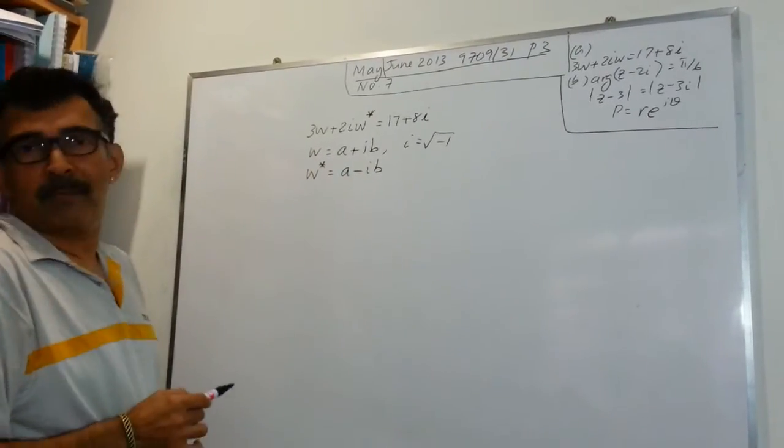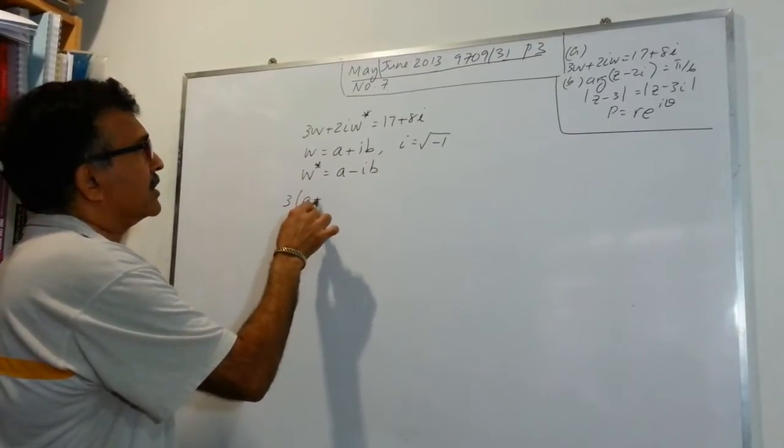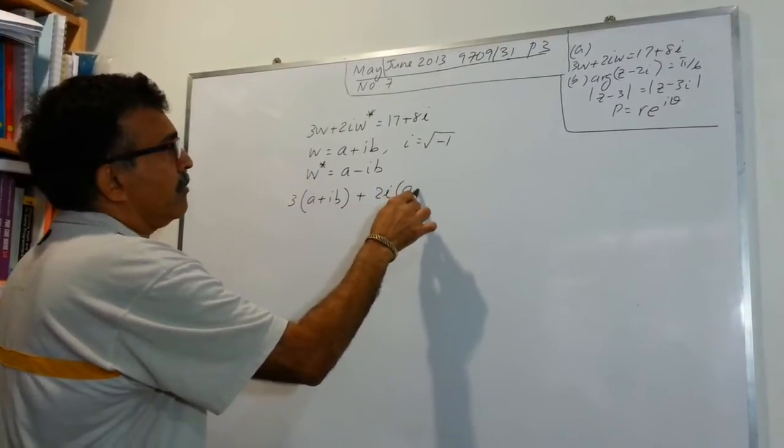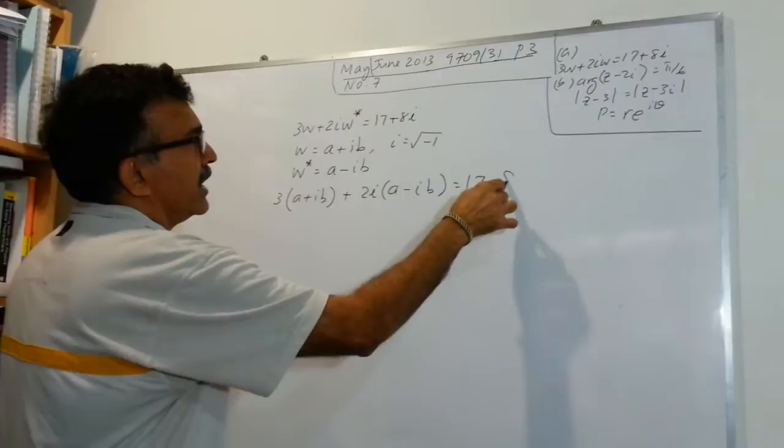So now let's plug in. We have 3(A plus IB) plus 2I(A minus IB) equals 17 plus 8I.